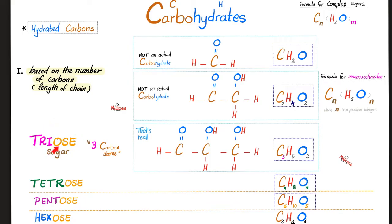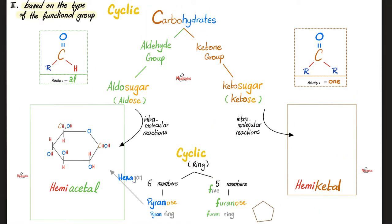A famous triose is glyceraldehyde. Tetrose: erythrose. Pentose: ribose and ribulose. Hexose: glucose, fructose, and galactose. Some carbohydrates have an aldehyde group — we call them aldo sugars or simply aldoses. Those that have a ketone group we call keto sugars or ketoses.